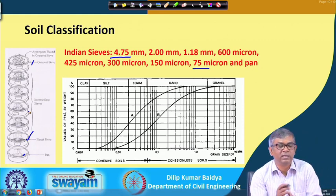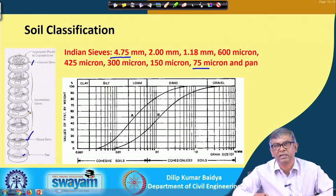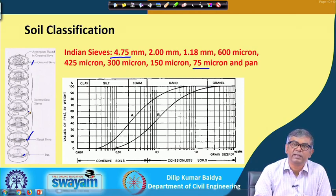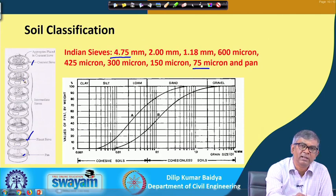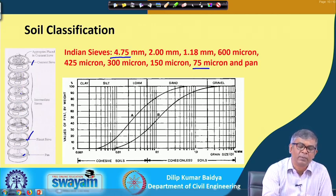A certain amount of soil is placed in the top sieve, and subsequent sieves are below it. We can shake it by hand or put it in a mechanical shaker for 10 to 15 minutes. If a soil particle is smaller than 4.75 mm it passes through and comes to the next sieve, and similarly down to the 75 micron sieve. Each sieve retains some amount and passes some amount, and what passes through the 75 micron sieve is retained in the pan.